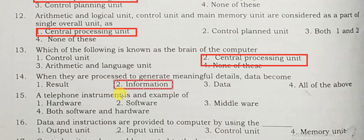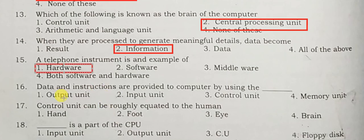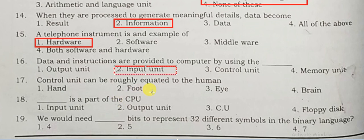Data becomes information. A telephone instrument is an example of hardware. Data and instructions are provided to the computer by using the input unit. Control unit can be roughly equated to the human brain.